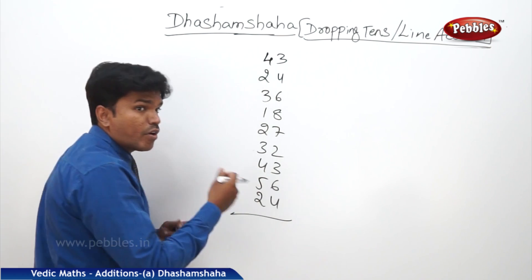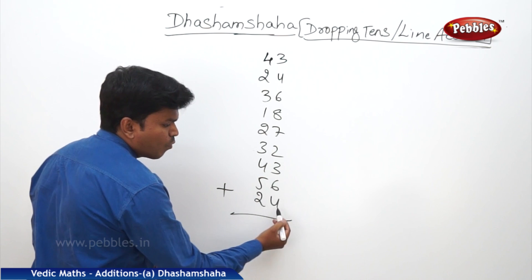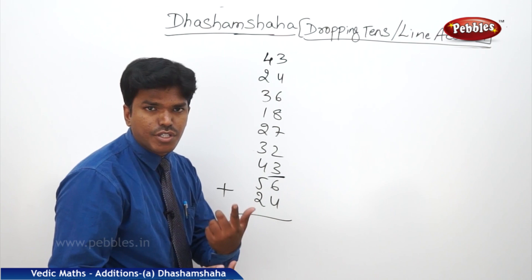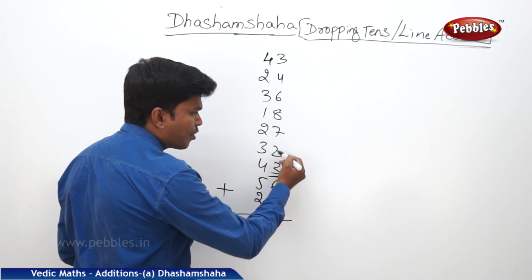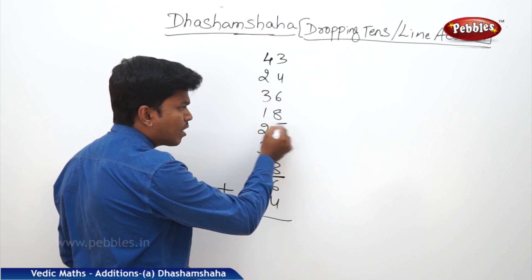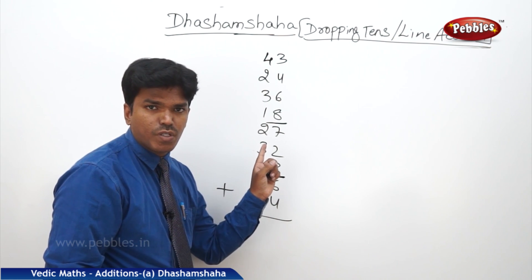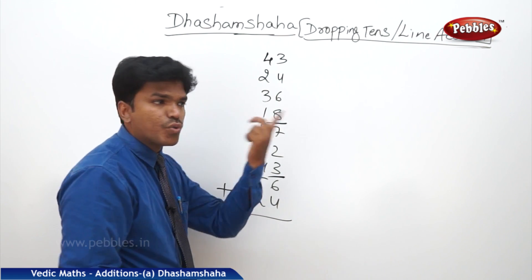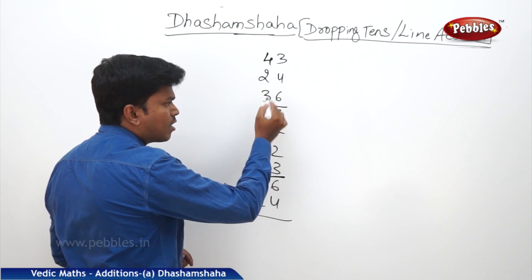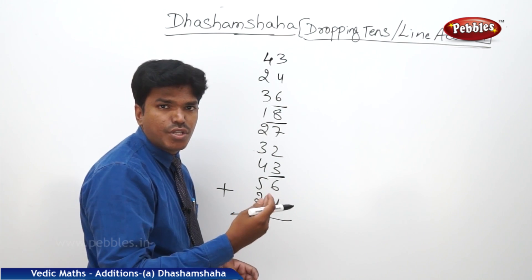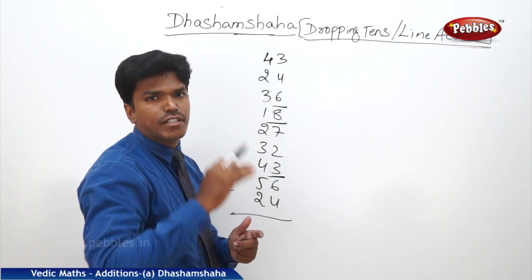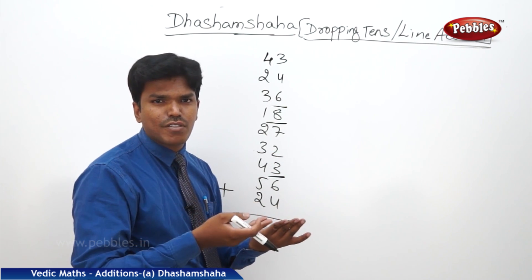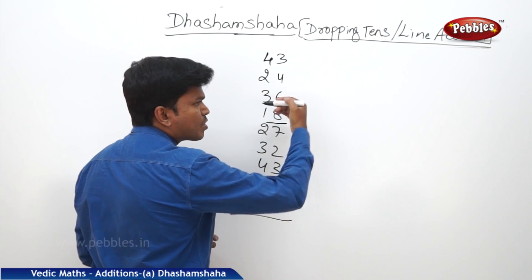Start from the bottom as usual. What is 4 plus 6? 10 — drop the 10. Remaining is 0. 0 plus 3? 3. Then 3, 2, 5. 5, 7? 12 — more than 10, drop it. Remaining is 2. Carry 2 to the next number. 2 plus 8? 10 — drop 10. Remaining is 0. If it is 0, you can start freshly — no need to carry 0, because 0 plus any number is the same number.